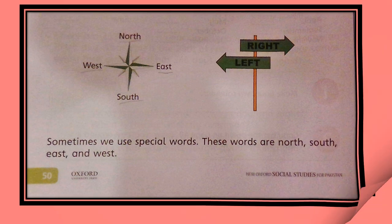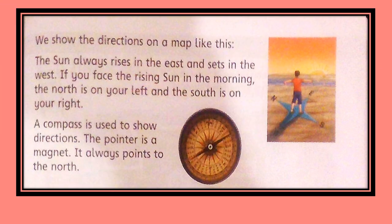We show directions on a map. The sun always rises in the East and sets in the West. If you face the rising sun in the morning, the North is on your left and the South is on your right. You can see the little boy in the picture standing facing towards the sun. Since the sun always rises in the East, if we are standing facing the sunrise, North is on our left and South is on our right.